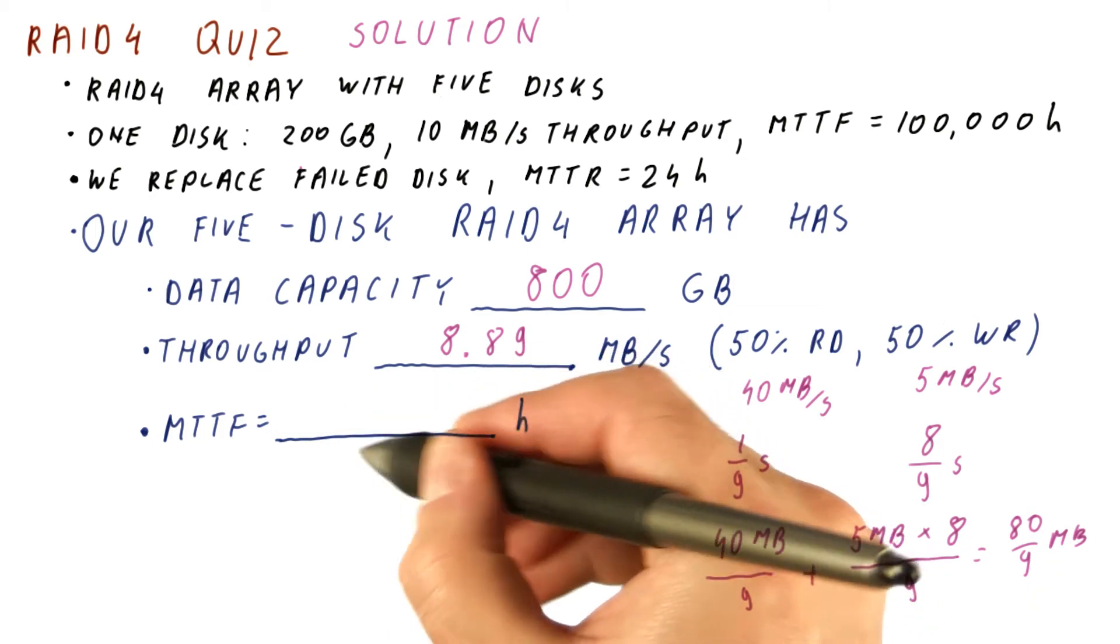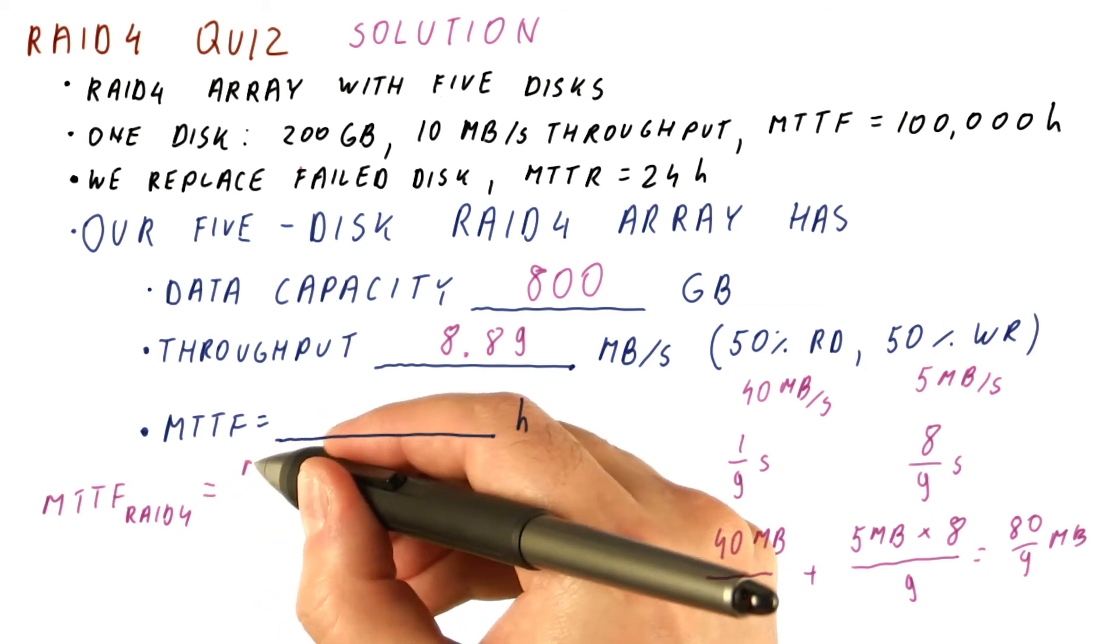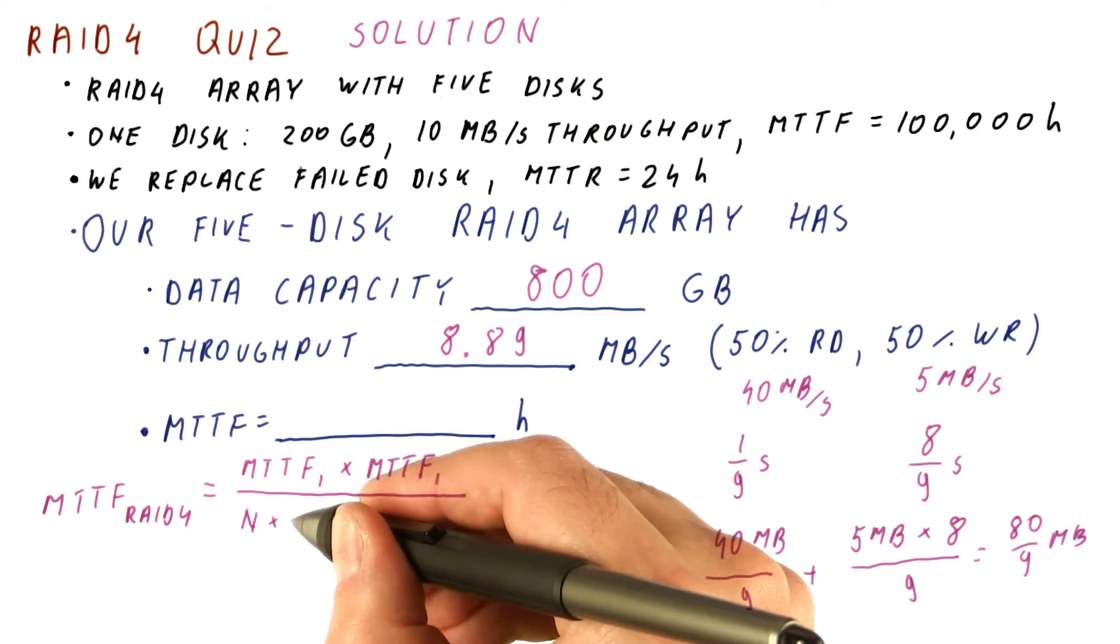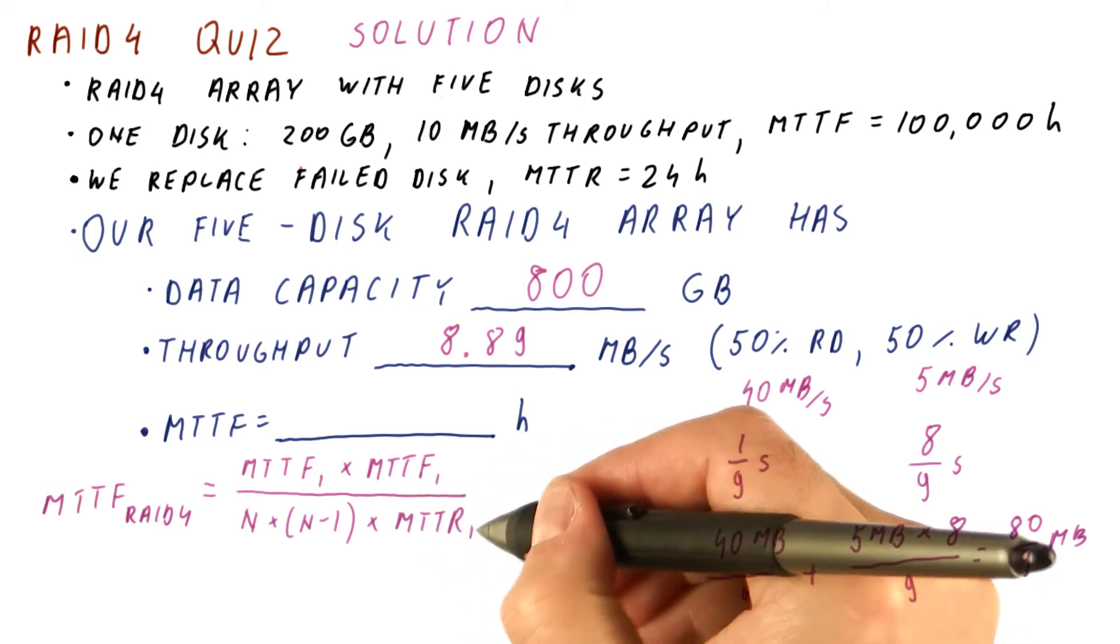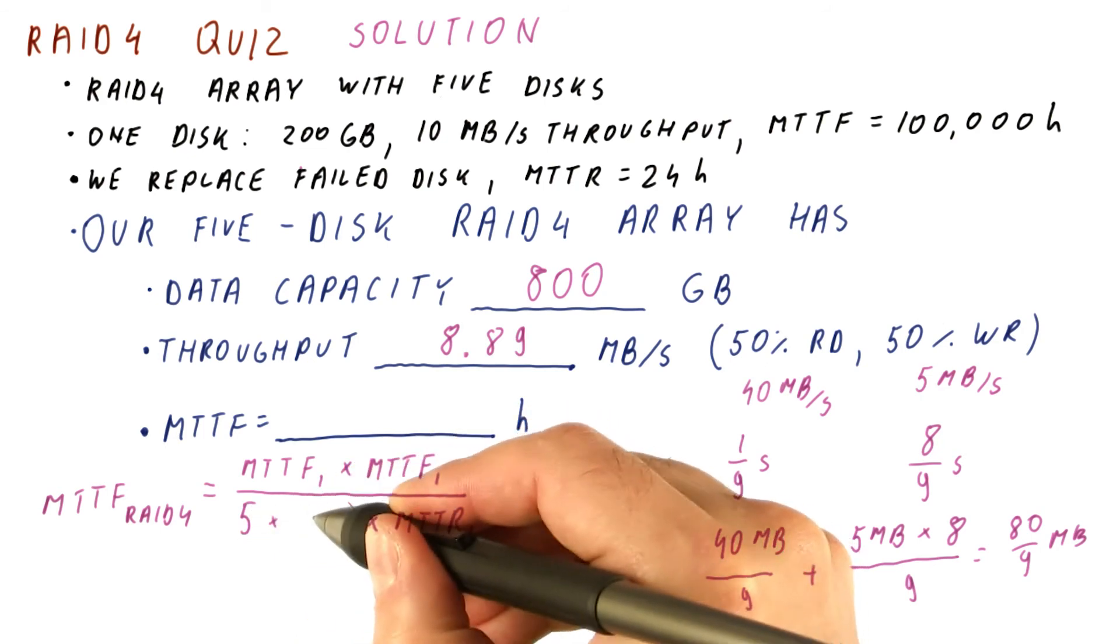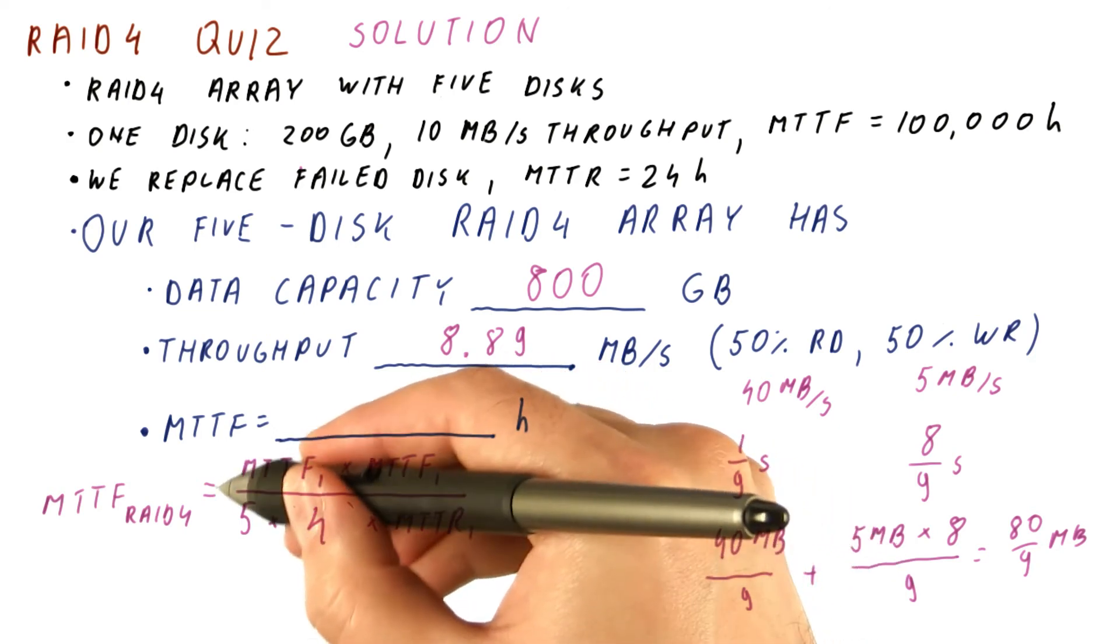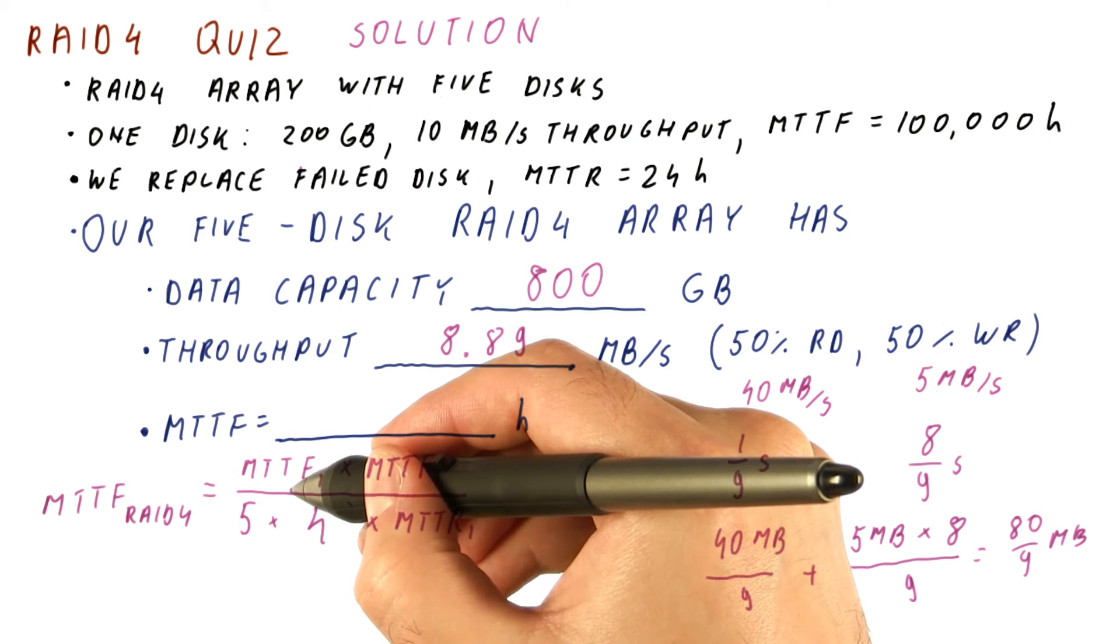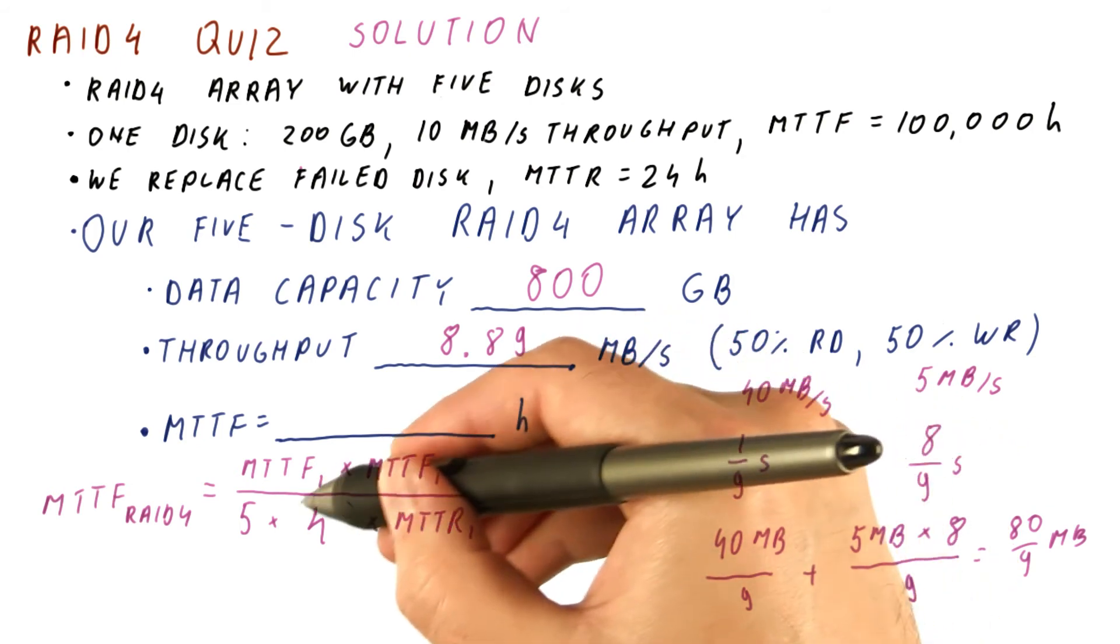So the final question here is what's the MTTF? We know that the MTTF of RAID 4 is equal to the MTTF of one disk squared, divided by N times N minus 1, times the time it takes us to replace a disk. Our N in this case is 5, so we get 5 times 4 times this. And in this expression, again, this is the time that we get to work with a full RAID 4 array until we have a failed disk. And this is how many times we survive the repair without the second disk failing.